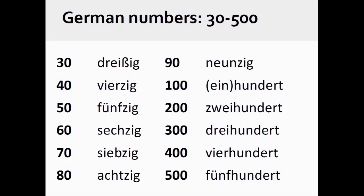The German numbers 30 through 500 are pronounced dreißig, vierzig, fünfzig, sechzig, siebzig, achtzig, neunzig, hundert, zweihundert, dreihundert, vierhundert, fünfhundert.